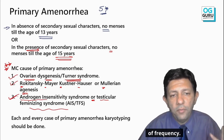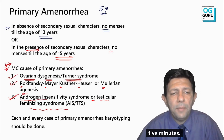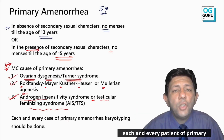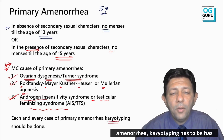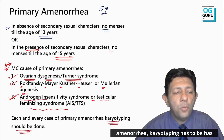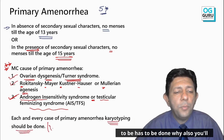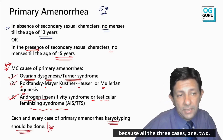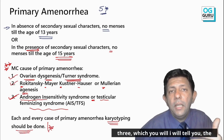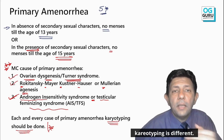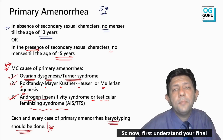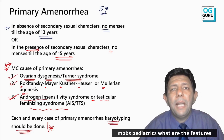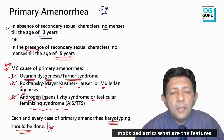Remember — like breaking news — each and every patient of primary amenorrhea must have karyotyping done. You will understand why in a minute, because all three top causes have different karyotypes.